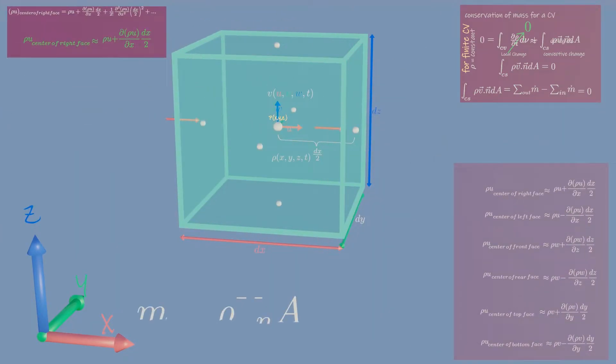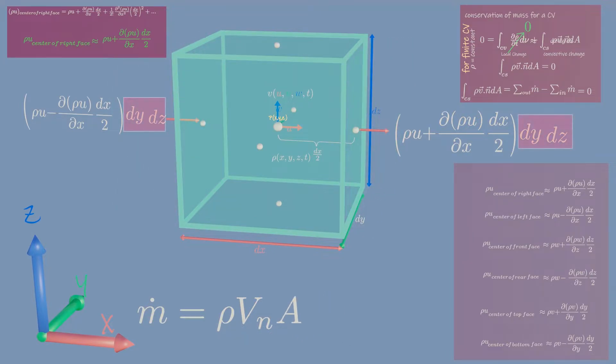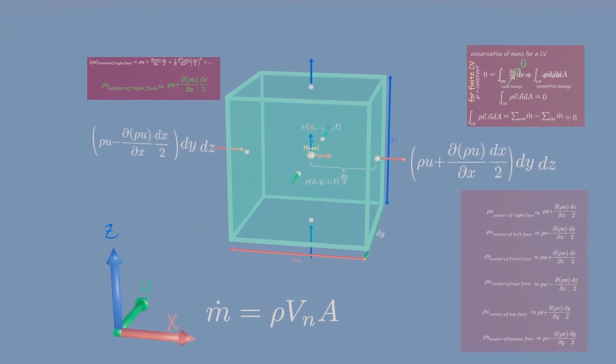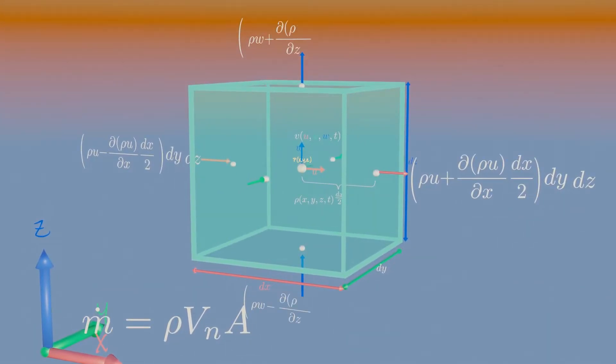The mass flow rate into or out of one of the faces is equal to the density times the normal velocity component at the center point of the face, times the surface area of the face. Therefore mass flow rate through each face of our infinitesimal control volume is...